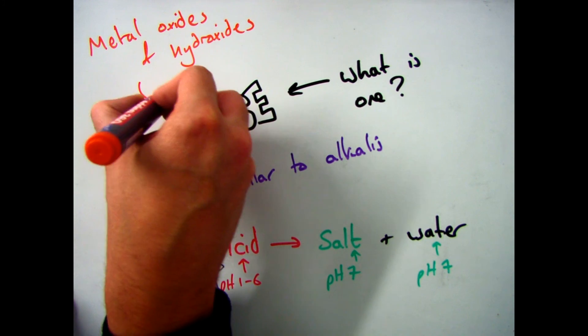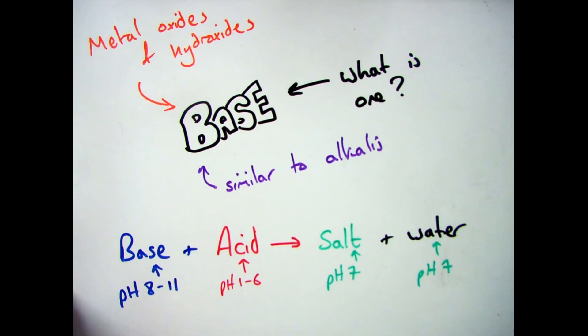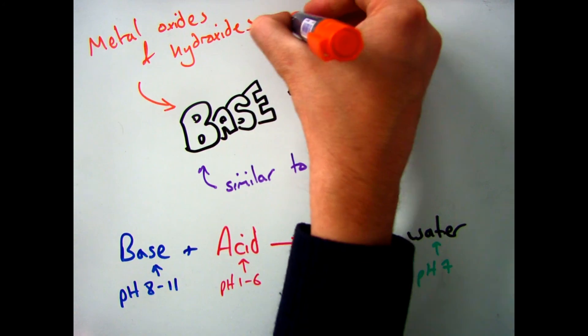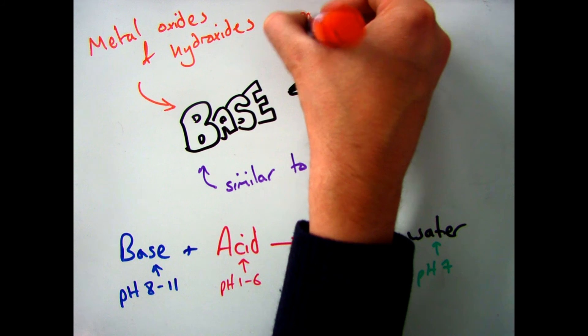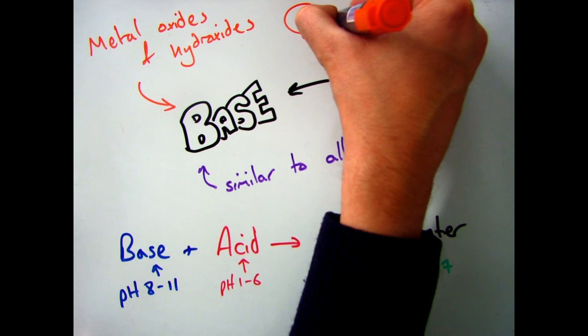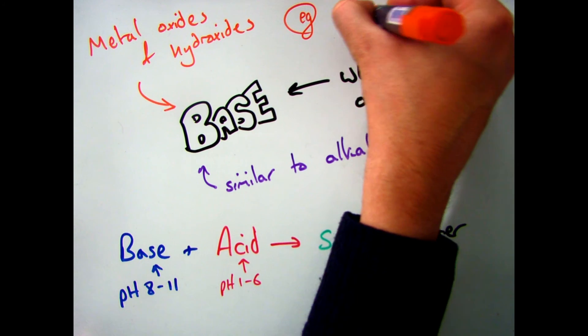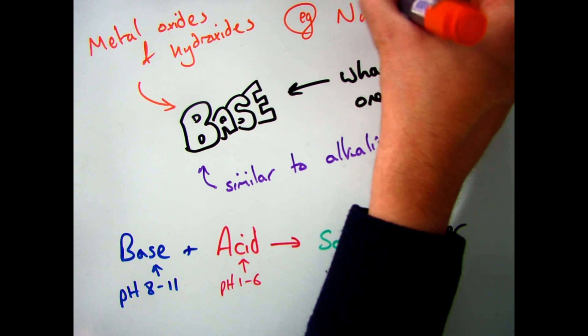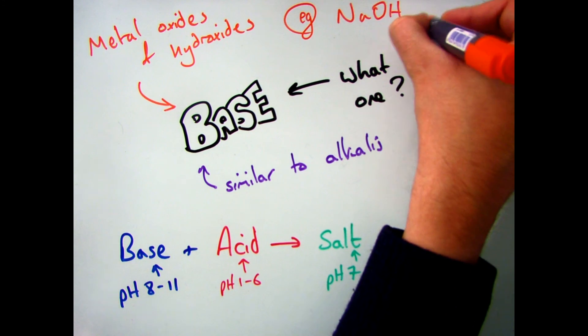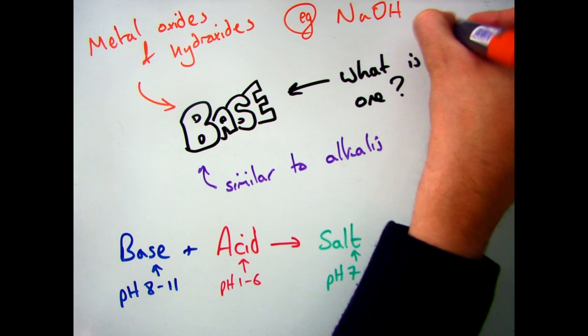Examples of bases that produce salt and water are metal hydroxides and metal oxides. For example, we've got sodium hydroxide and magnesium oxide, both of which are bases.